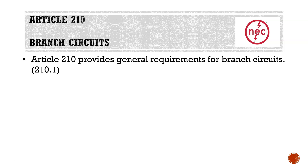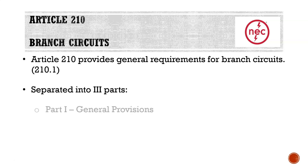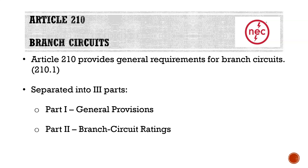Article 210 covers branch circuits and provides general requirements. It is separated into three separate parts: Part 1, general provisions; Part 2, branch circuit ratings; and Part 3, required outlets.